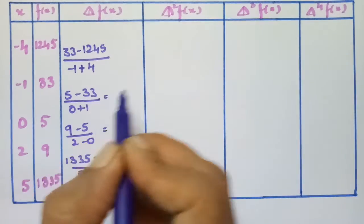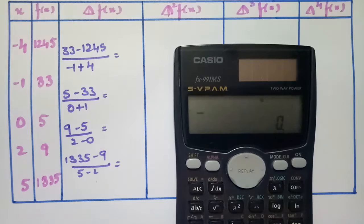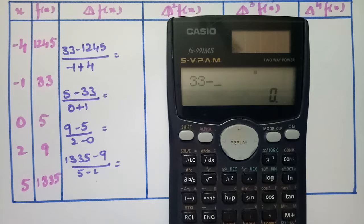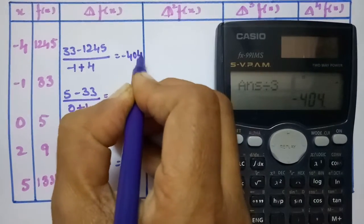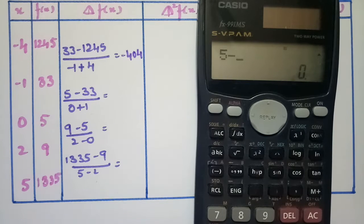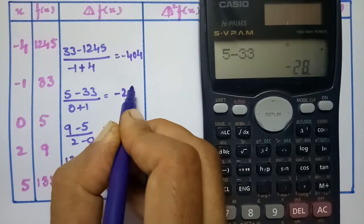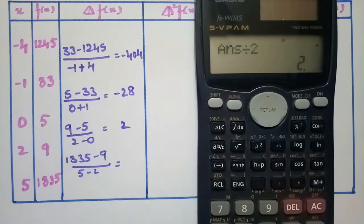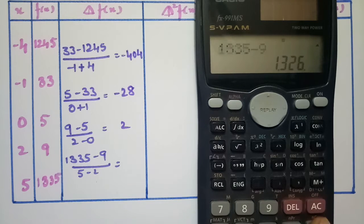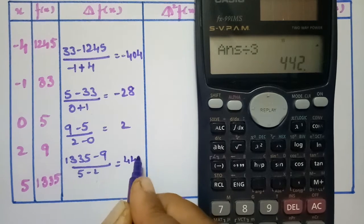Using a calculator, we can compute: (33 minus 124.5) divided by 3 gives minus 40.4. The next value (5 minus 33) divided by 1 gives minus 28. Then (9 minus 5) divided by 2 gives 2, and (1335 minus 9) divided by 3 gives 442. So this is the first difference table.